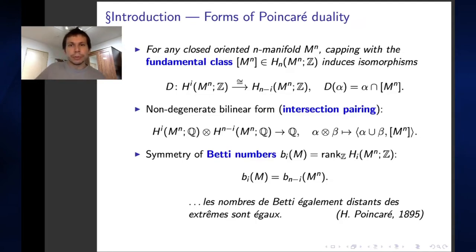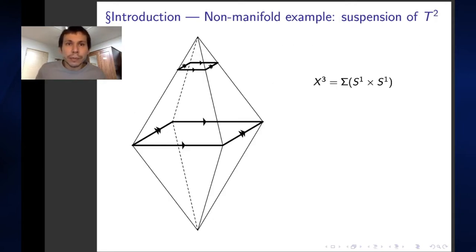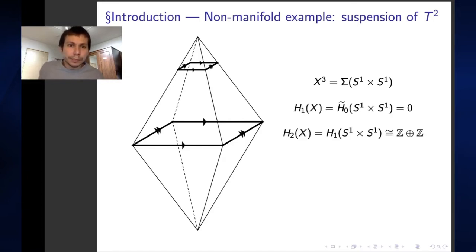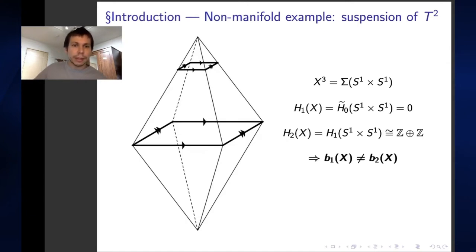Of course, we cannot expect that the beautiful symmetry of Poincaré duality is valid for spaces more general than manifolds, as the following example already shows. Let us consider the suspension of a two-torus. The two-torus is imagined as the square with opposite edges identified, and the suspension is indicated in the figure on the left. Since the suspension shifts the reduced homology by one, the first and second Betti numbers of the space X are not equal, so naive Poincaré duality cannot hold in this case.